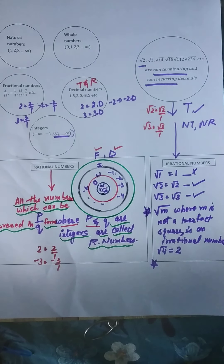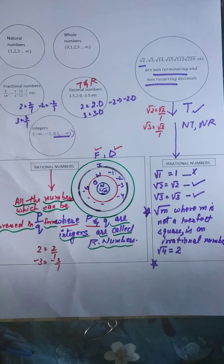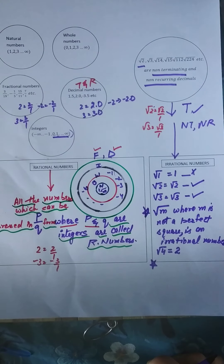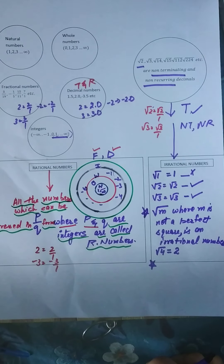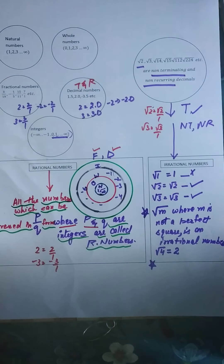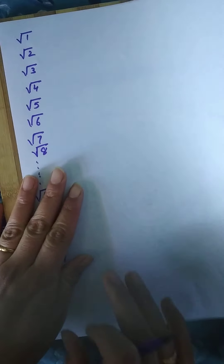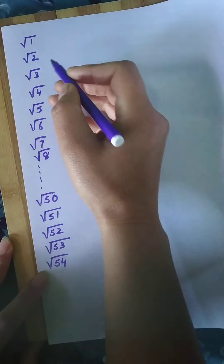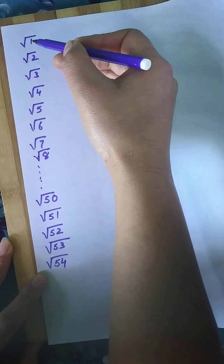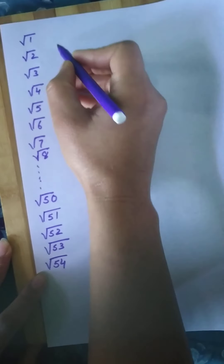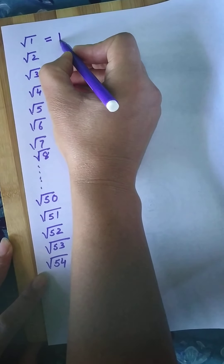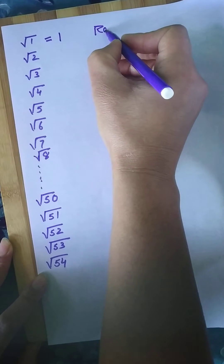Before moving ahead, just pause the video and recall what rational and irrational numbers are — read out the definitions for yourself, take time to digest and remember them. Now we'll do a simple exercise. You'll do it from root 1 to root 100. Root 1 equals 1, and you can summarize: it's a rational number.